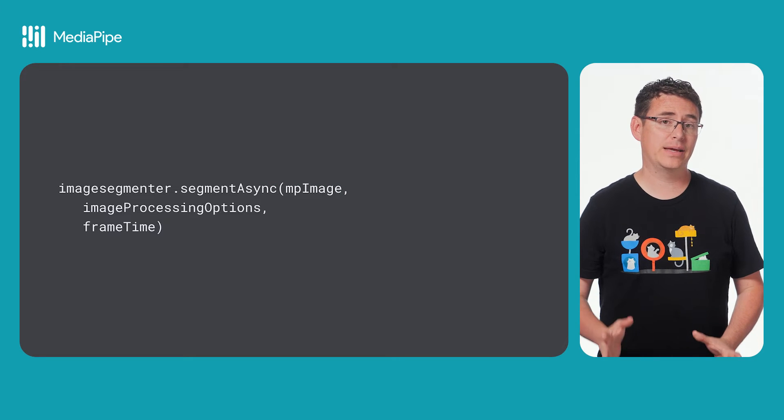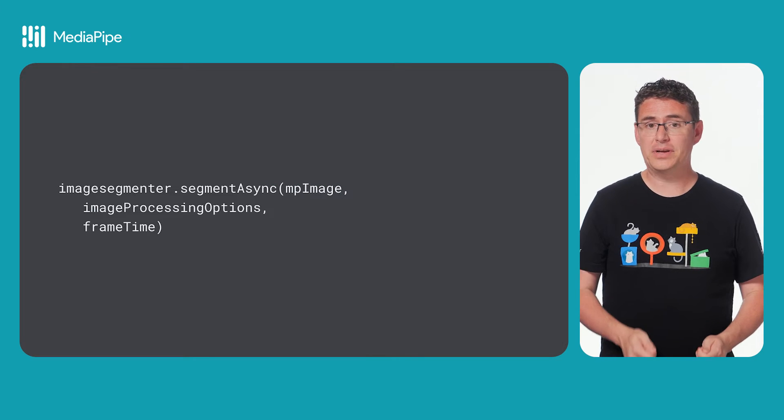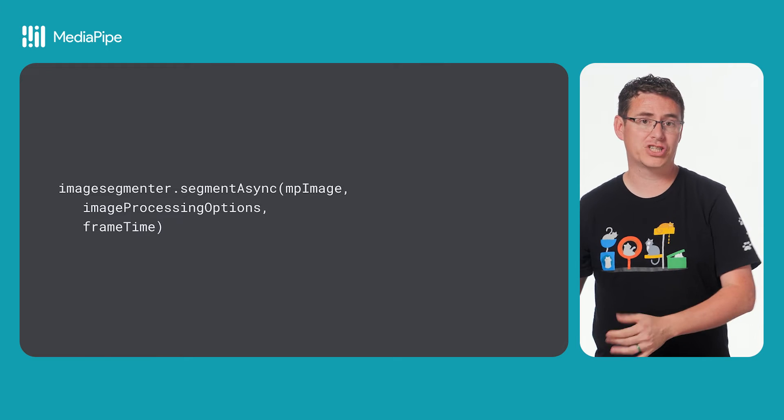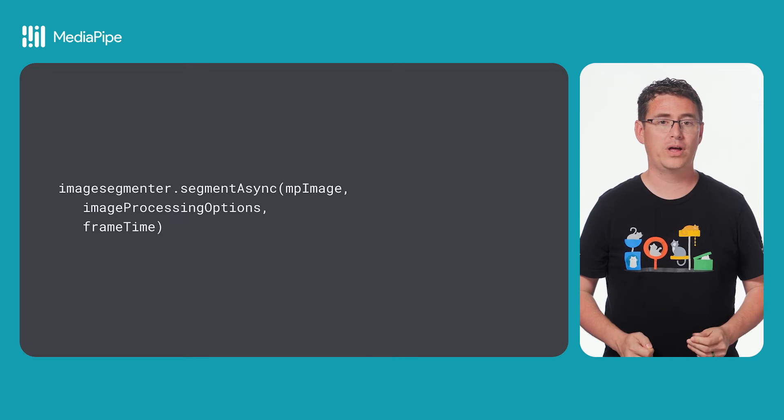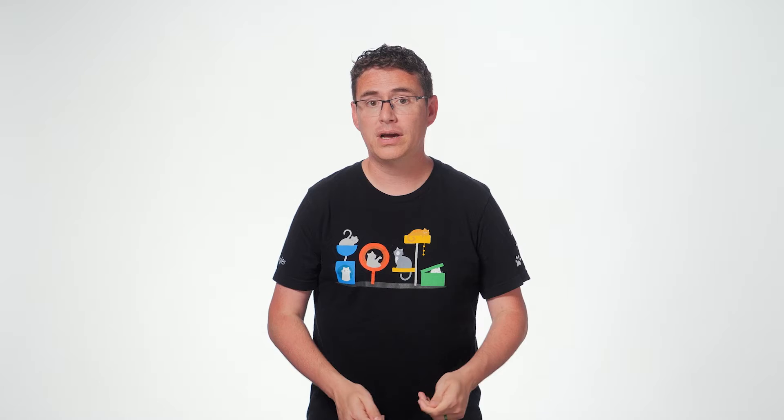After you have your MP image created, you can pass it to the image segmenter's segment async function, along with a timestamp that helps MediaPipe tasks automatically perform flow control in the optional image processor. If you're working with a video or image file, then there's also a synchronous version of this function that's just called segment.